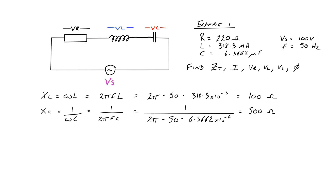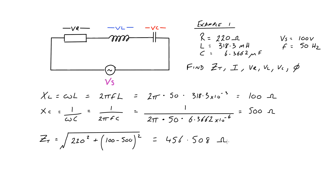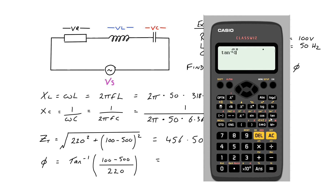Now that we know the reactances, we can find the impedance. Z is the square root of the resistance squared added to the difference of the reactances, all squared. That comes out as 456.508 ohms — that's the impedance to current flow in this circuit at 50 hertz. Now we know the impedance, we can also find the phase angle, which is tan to the minus one of the opposite side divided by the adjacent side. That comes out as minus 61.19 degrees, so that's how much the series current is leading the supply voltage.